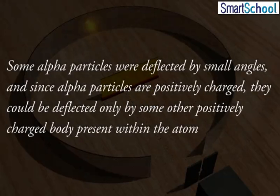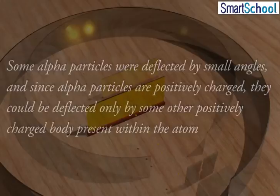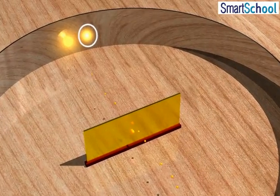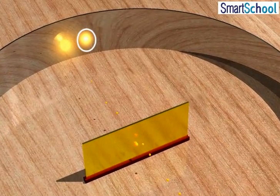As some of the alpha particles were deflected by small angles, and since alpha particles are positively charged, they could be deflected only by some other positively charged body present within the atom. The alpha particles which deflected through small angles were those which passed far from this positive body.